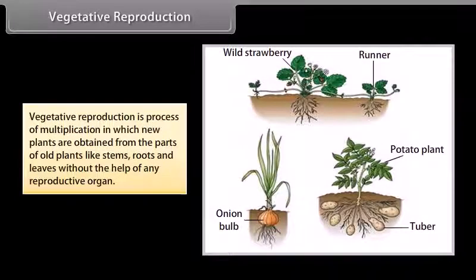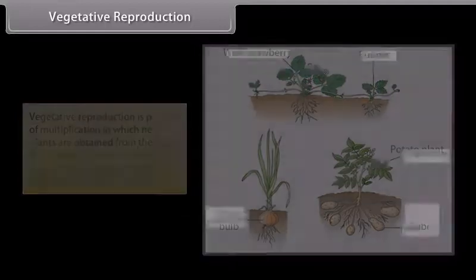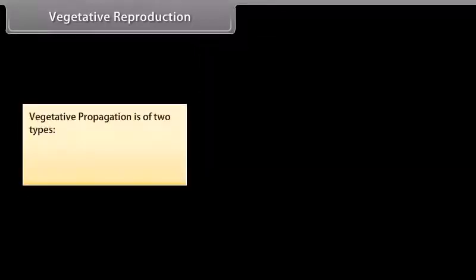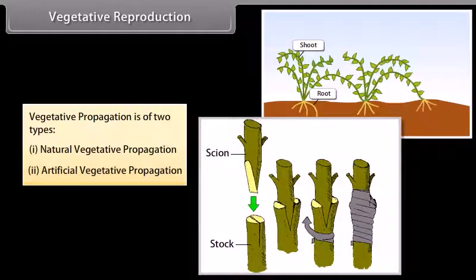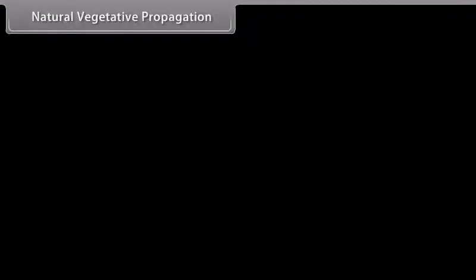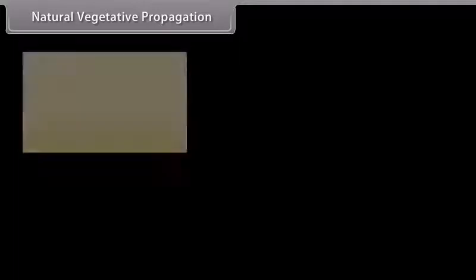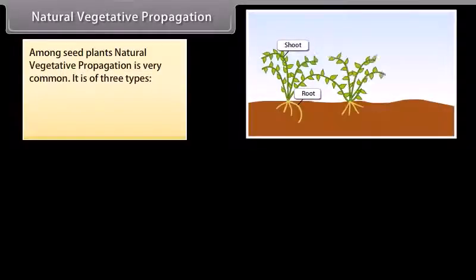Vegetative reproduction is the process of multiplication in which new plants are obtained from the parts of old plants like stems, roots, and leaves, without the help of any reproductive organ. Vegetative propagation is of two types: natural vegetative propagation and artificial vegetative propagation. Among seed plants, natural vegetative propagation is very common and is of three types: by roots, by stem, and by leaves.